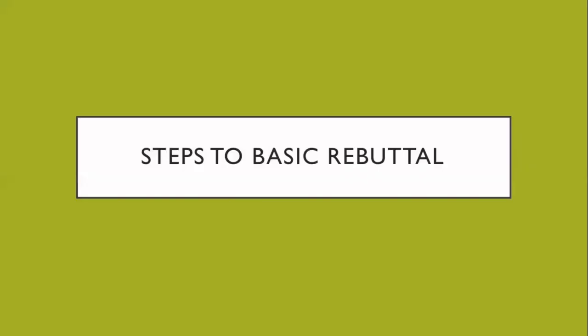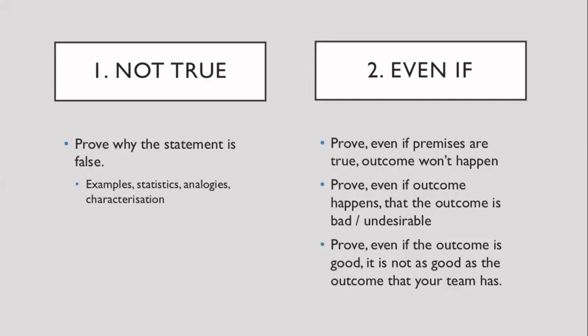Let's start with the basic steps to rebuttal. In essence, rebuttals are about proving the other side wrong. However, it is not good enough to simply claim that something is wrong — you have to actually disprove the premise itself. There are two basic steps to any rebuttal. First, you have your 'not true' response. You have to prove why the statement made is false, and you can choose to do that either through providing statistics, analogies, examples, or characterization of the situation. Basically, identify something factually untrue and call it out with evidence.